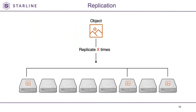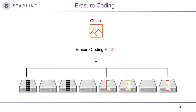Replication is quite simple: we take one object and make an X number of copies of it. The default setting for Ceph replication is three copies of each object you want to store on the cluster. Erasure coding, on the other hand, takes one object, splits it into a number of data chunks, then calculates and adds a number of encoding chunks. All those pieces then get stored into different OSDs.